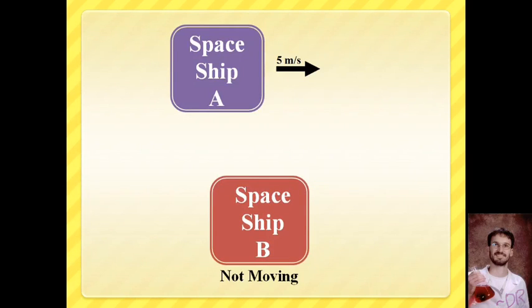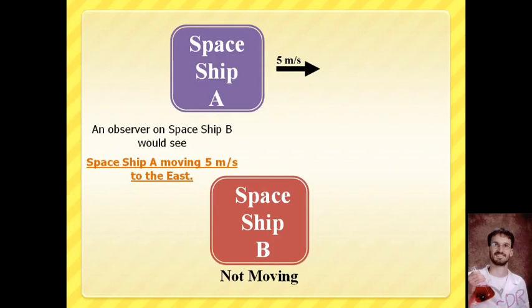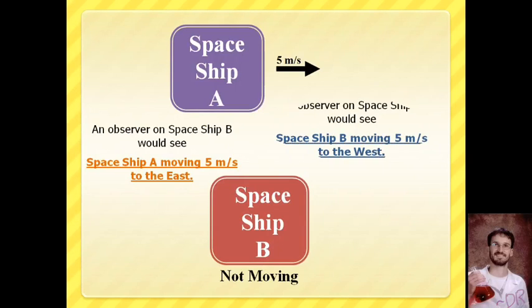All of physics is based on your reference point. Two people from two different places would observe motion in very different ways. So let's imagine that we're in space. We have Spaceship A and Spaceship B. There's nothing else around this, just the black emptiness of the vacuum of space. Spaceship A happens to be moving in this direction at five meters per second. And Spaceship B happens to be standing perfectly still. If I was on Spaceship B, I would see Spaceship A moving five meters per second this direction. And I would wave at them as they went by.